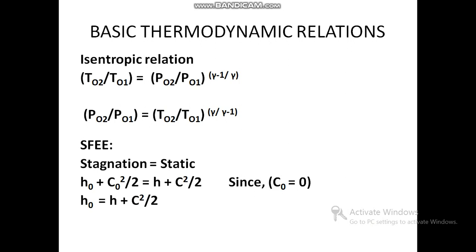The next relation connects the stagnation component to the static component. Using the steady flow energy equation, we consider enthalpy and the dynamic pressure term C squared over 2. On the left-hand side we have stagnation values; on the right-hand side, static components. That gives H0 plus C0 squared over 2 equals H plus C squared over 2. Since C0 equals zero for a stagnation state, the equation becomes H0 equals H plus C squared divided by 2.